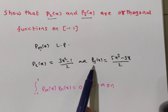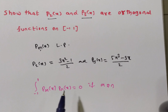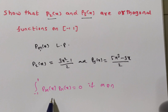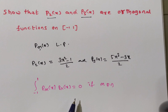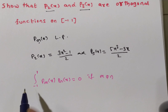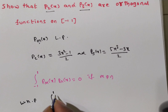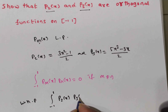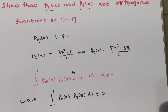Is M equal to N here? If M is equal to 2 and N is equal to 3, then M is not equal to N. So now what we have to prove is: the integral from minus 1 to 1 of Pm of X times Pn of X equals 0. That is, we have to prove the integral from minus 1 to 1 of P2 of X times P3 of X dx is equal to 0.